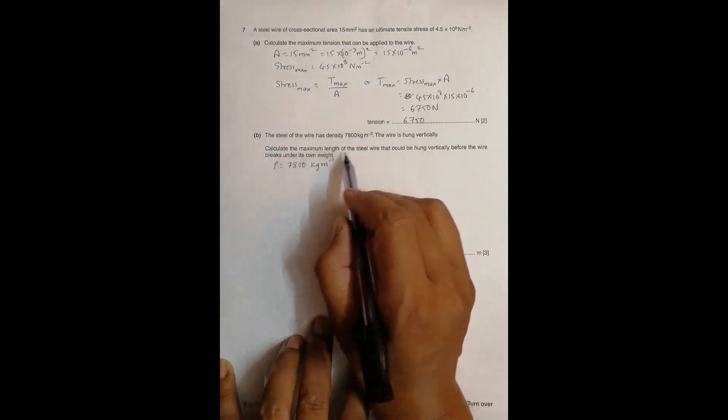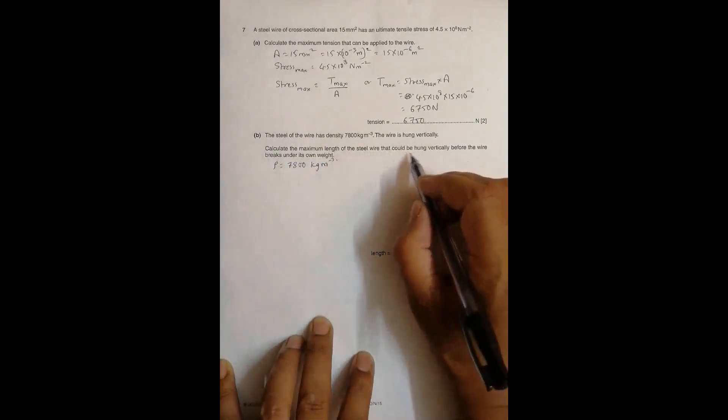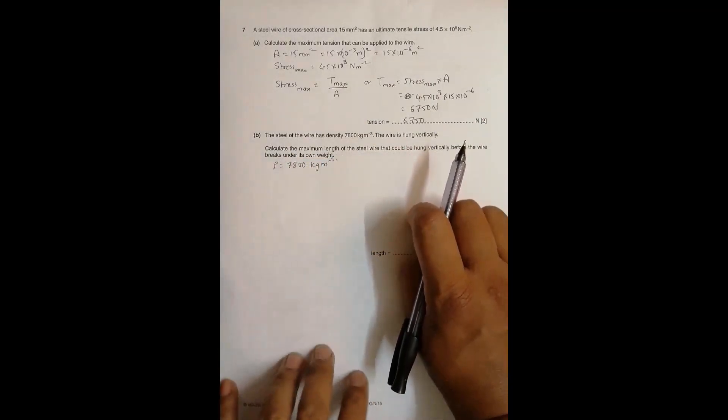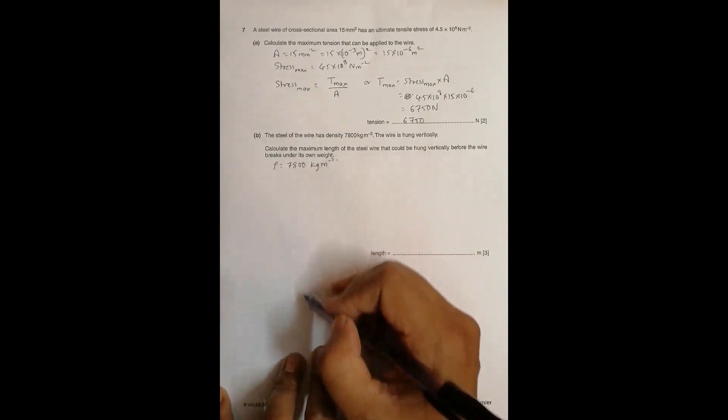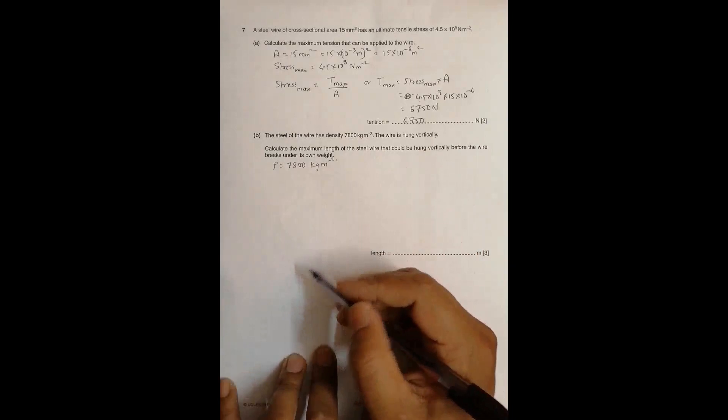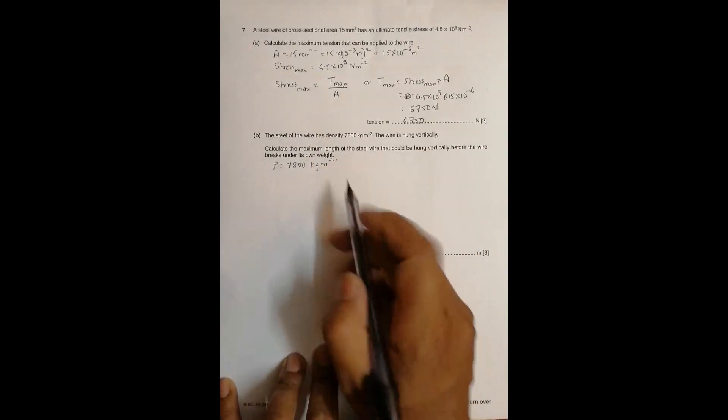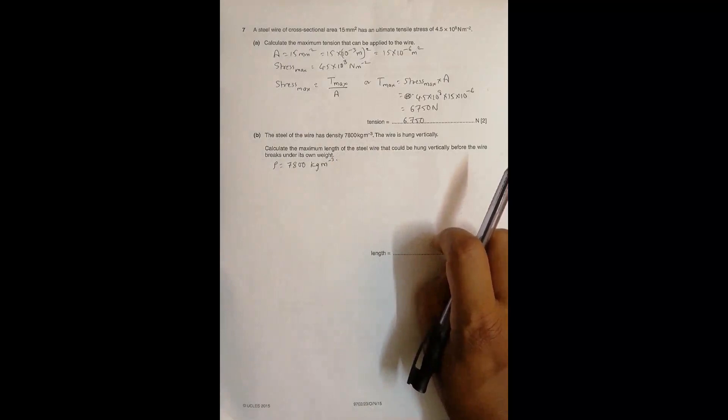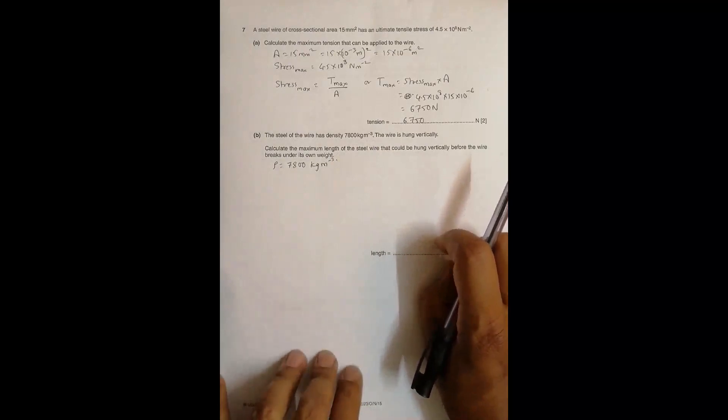Calculate the maximum length of the steel wire that could be hung vertically before the wire breaks under its own weight. When we go on adding the length of the wire, its weight increases and the same weight will exert force on the wire, and it is breaking under its own weight. So we have to find the maximum length possible.